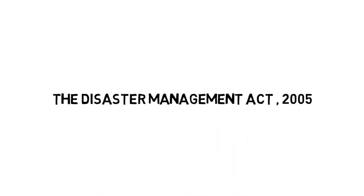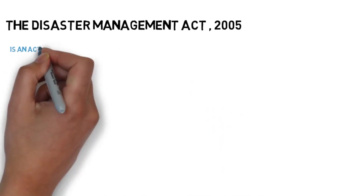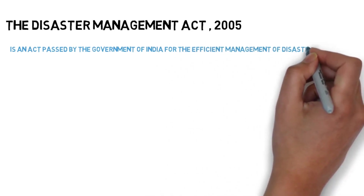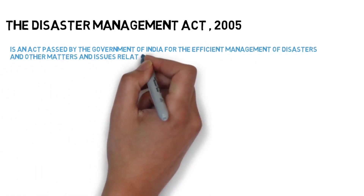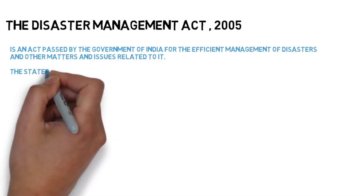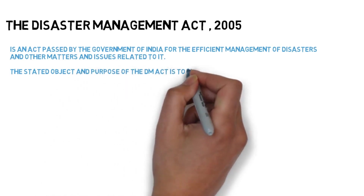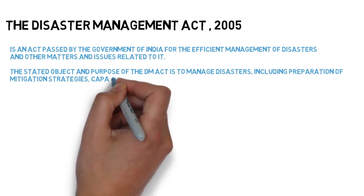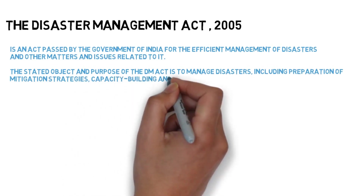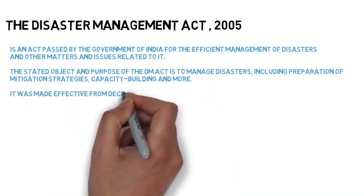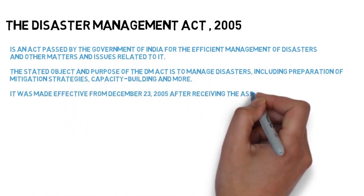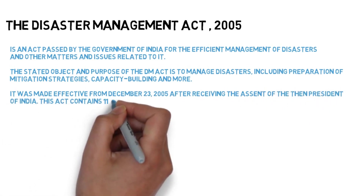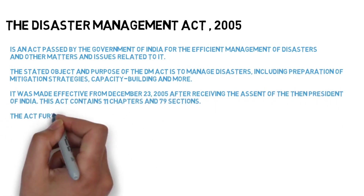The Disaster Management Act 2005 is an act which was passed by the Government of India for the efficient management of disasters and other matters related to it. It came into effect from 23 December 2005, but only after receiving the assent of the President of India. This act basically contains 11 chapters and 79 sections.